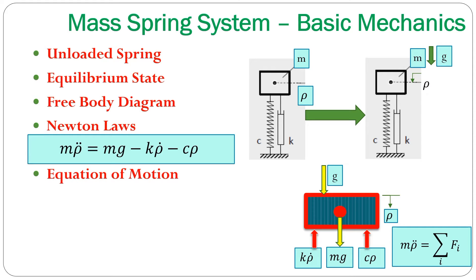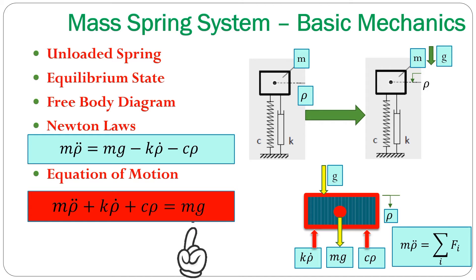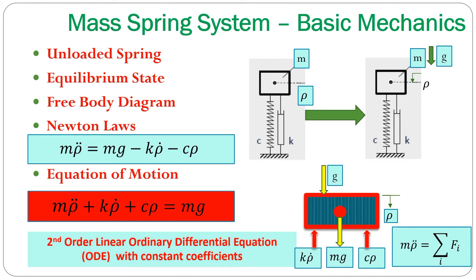This finalizes our equations of motion. All the parts that deal with the coordinate Rho — whether it is Rho, Rho dot, or Rho double dot — are collected on the left-hand side. On the right-hand side, we have the external force, which is the gravity force. We are now looking at a linear ordinary differential equation. It is linear because Rho, Rho dot, and Rho double dot are all linear. Since Rho double dot is the highest derivative, we have a second-order differential equation with constant coefficients: M, the damping factor K, and the spring rate C.